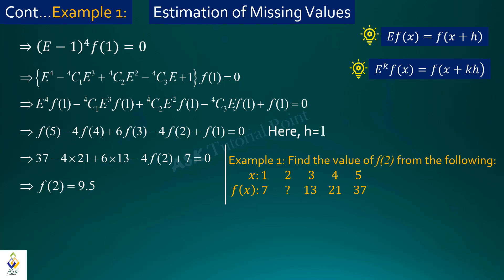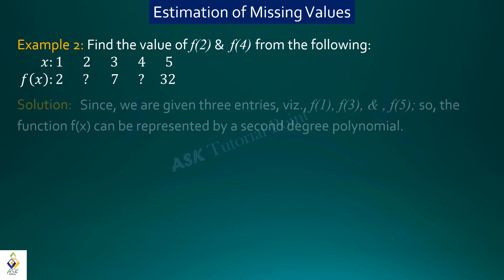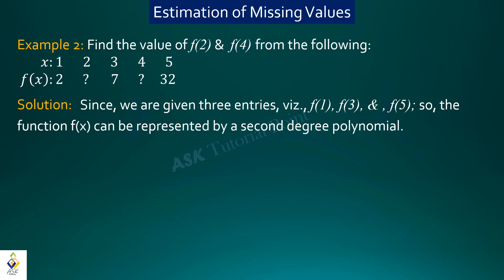In the second example, arguments 2 and 4 have corresponding entries missing. We need to find f(2) and f(4). Since we have only 3 known entries, f(x) can be assumed to be a second degree polynomial. According to the Fundamental Theorem of Finite Differences, the second difference of a second degree polynomial is constant, and higher differences are zero, so delta³ f(x) = 0.